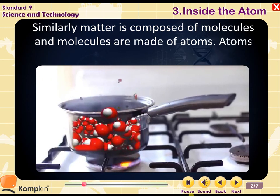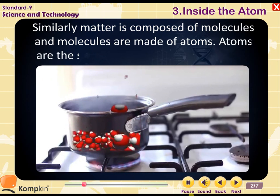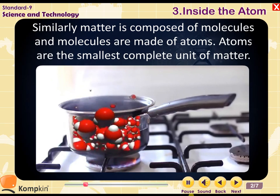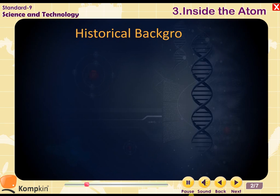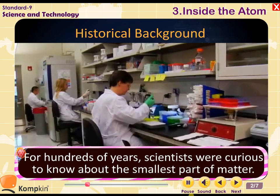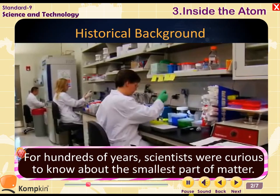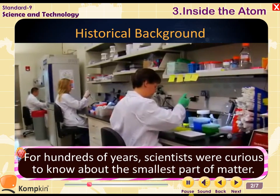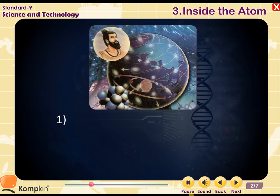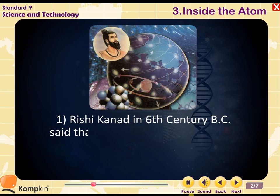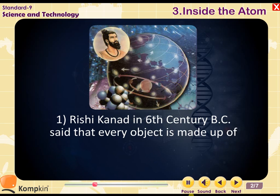Atoms are the smallest complete unit of matter. For the historical background: for hundreds of years, scientists were curious to know about the smallest part of matter. One Rishi Kanad, in the 6th century BC, said that every object is made up of an invisible tiny particle.